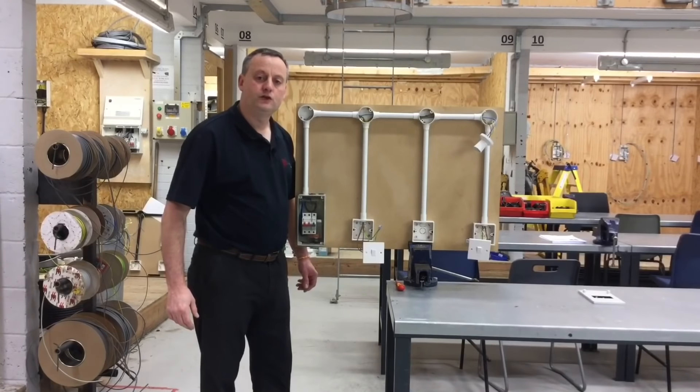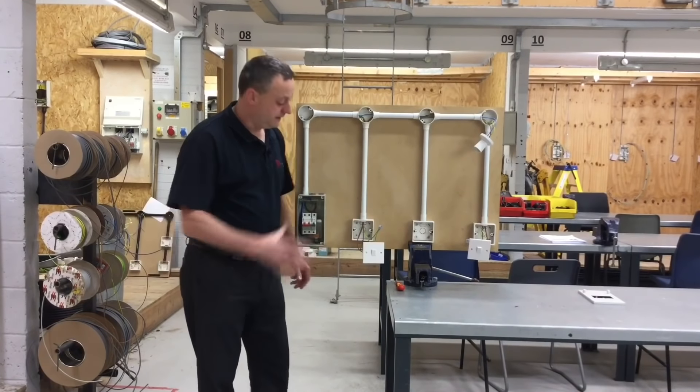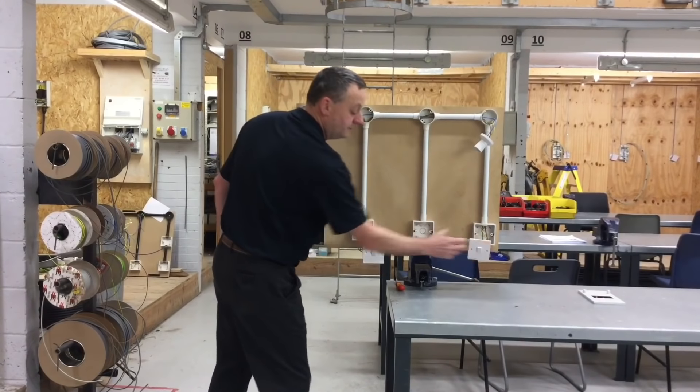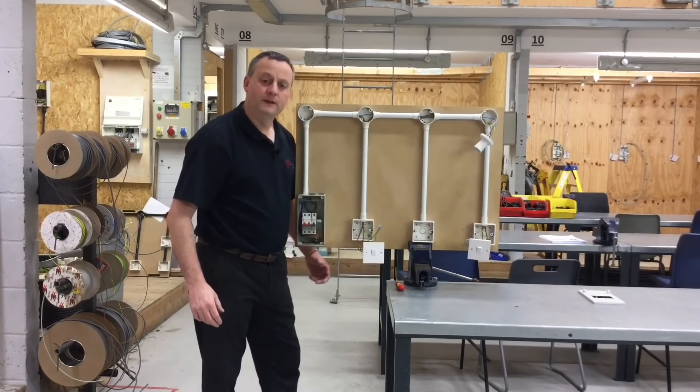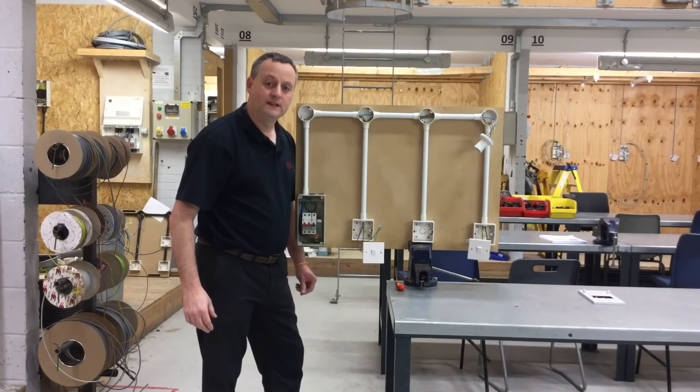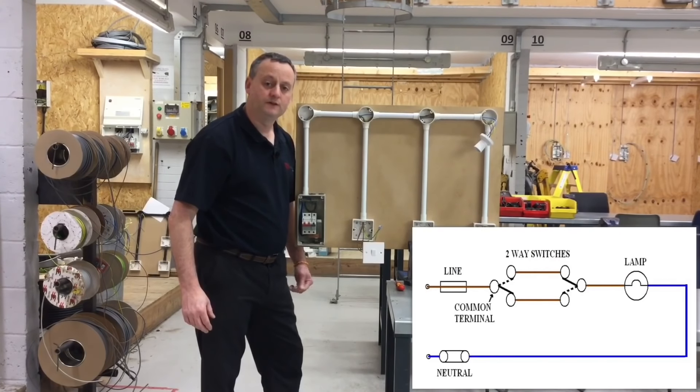In this video presentation we look at two-way switching of a lighting point when it's wired in conduit. We've got this switch here and this switch here being two-way switching controlling this lighting point here. Remembering as we're wiring in singles, we have the greater flexibility of taking the conductor exactly where we need it to go each time.